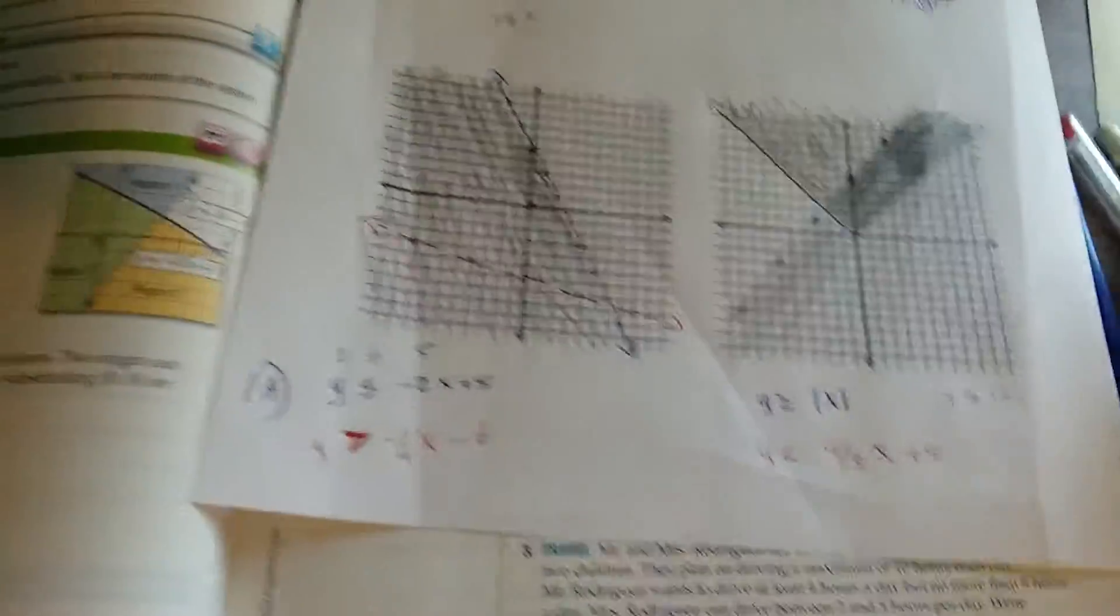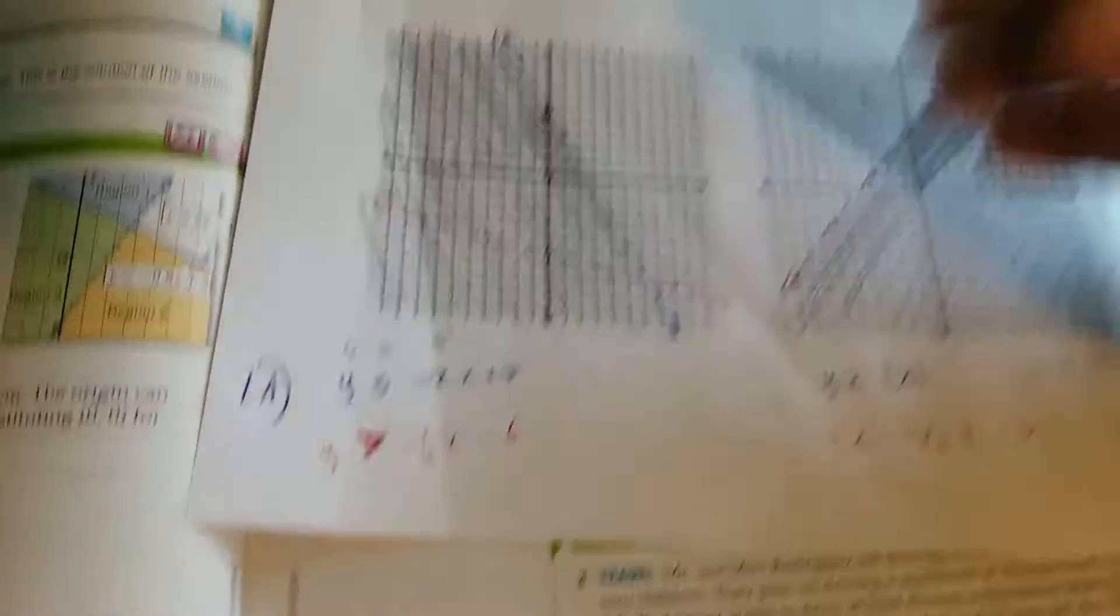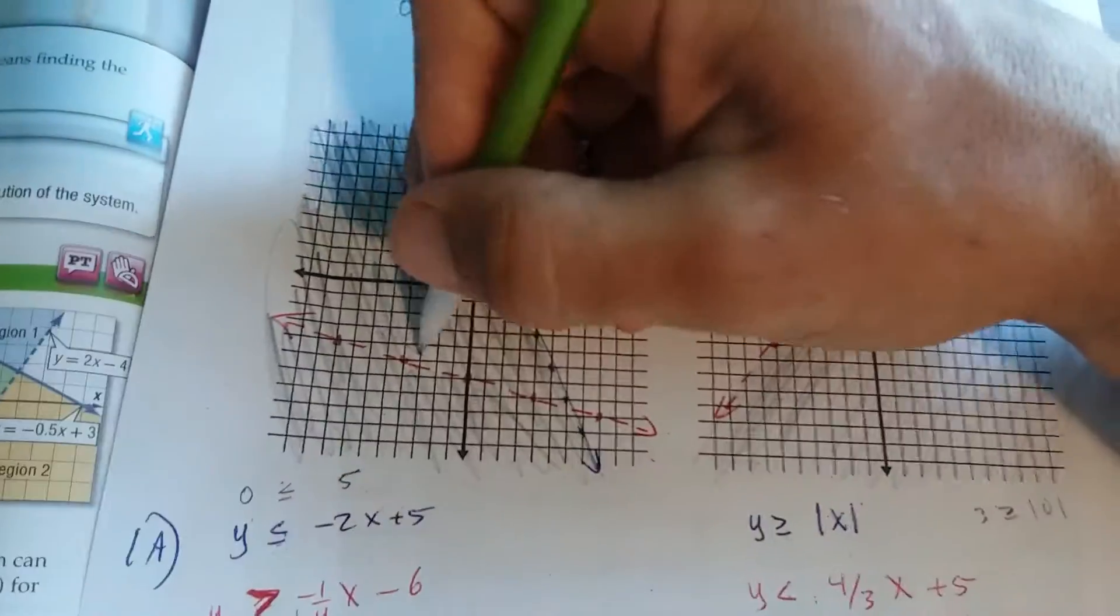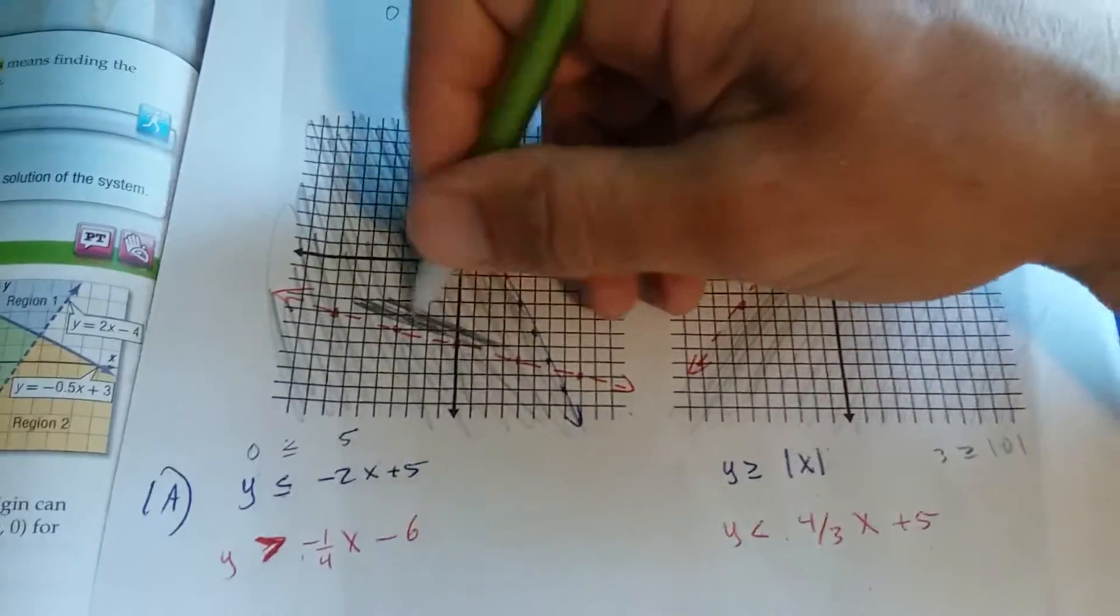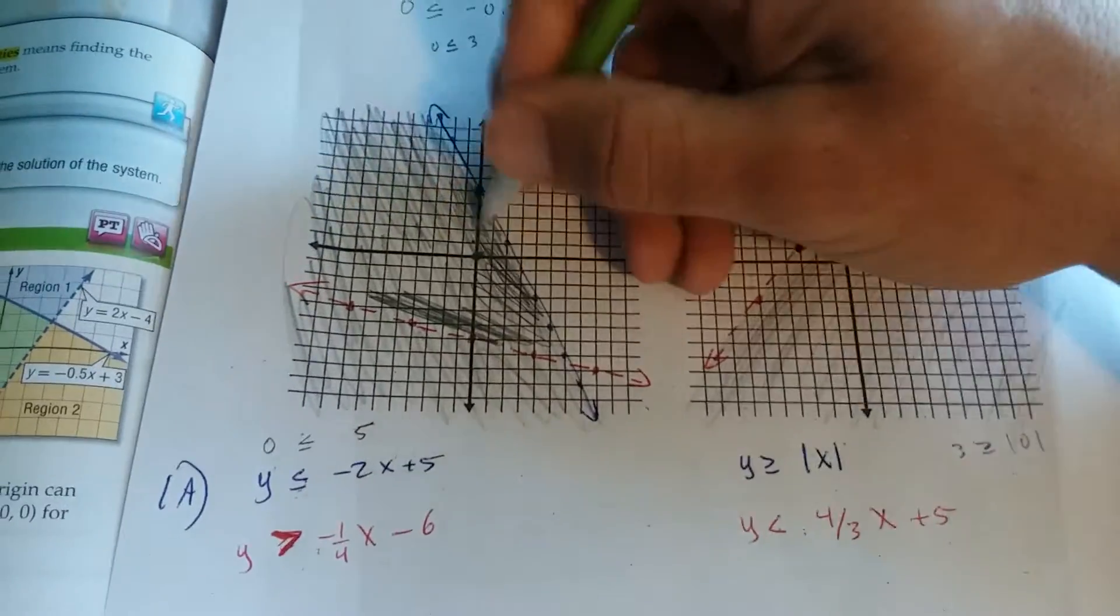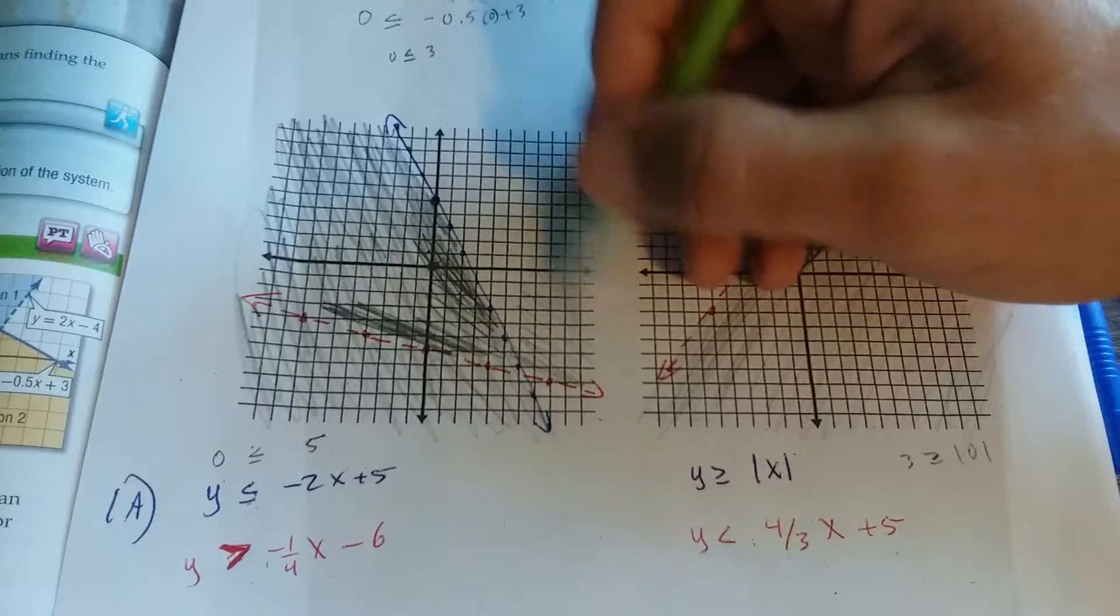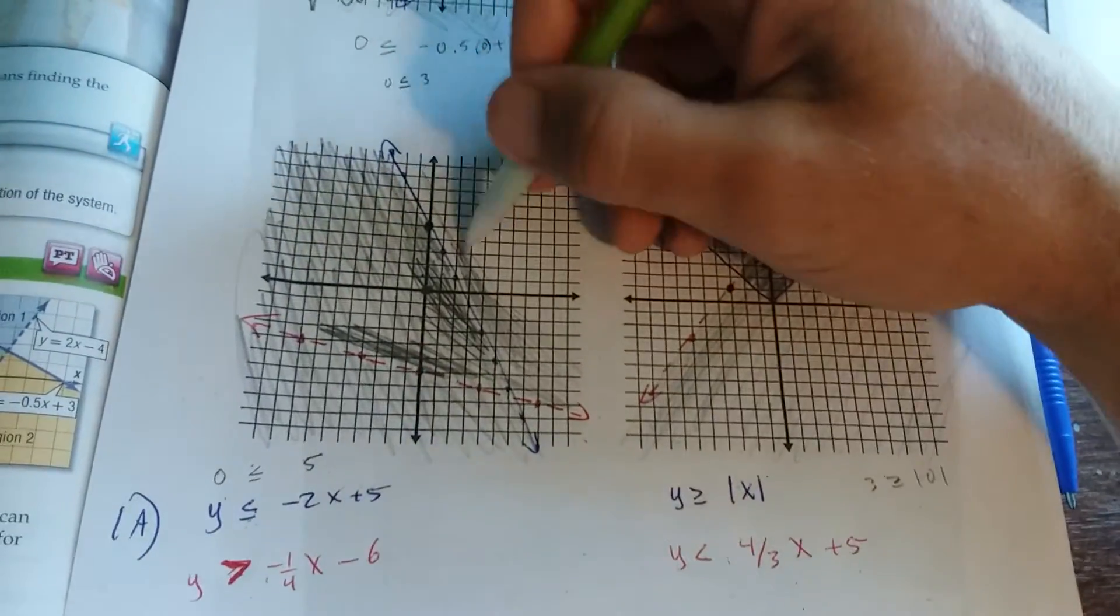And then you shade since you have y is greater than, you're above the line. So pick a point, I'll just pick this one, you're gonna shade above that point. So notice this area right here is the overlap. This area right here that I'm shading is part of the solution to just one inequality.